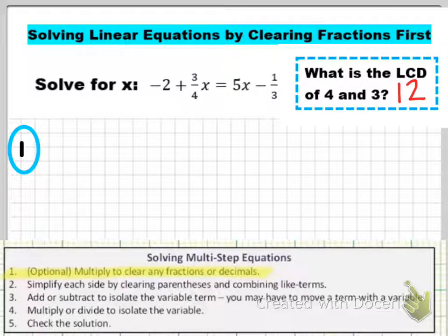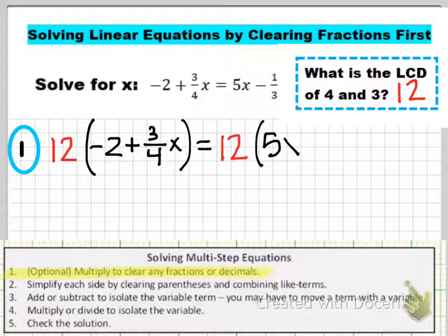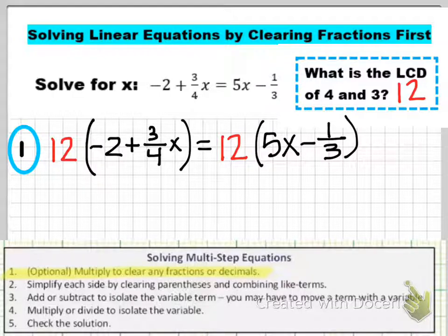That is the number that I'm going to use to multiply by both sides of the equation. So you'll notice I'm going to write a 12 and then in parentheses, I'm going to copy the left side of the equation. So I have 12 times the left side expression, which is -2 + 3/4x. Then I put my equal sign and then another 12 and that's going to get multiplied by the expression on the right side, which is 5x - 1/3. It's really important to wrap each expression in parentheses so you remind yourself that you're going to be distributing 12 to every single term in this equation.